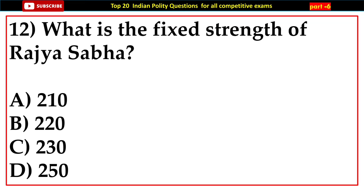Question number twelve: What is the fixed strength of Rajya Sabha? Options: A) 210, B) 220, C) 230, D) 250.